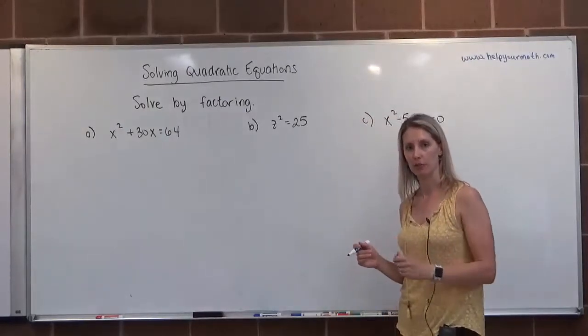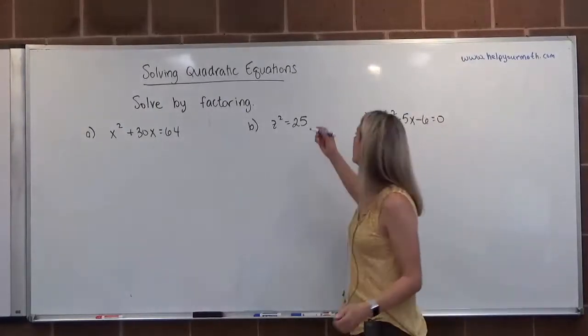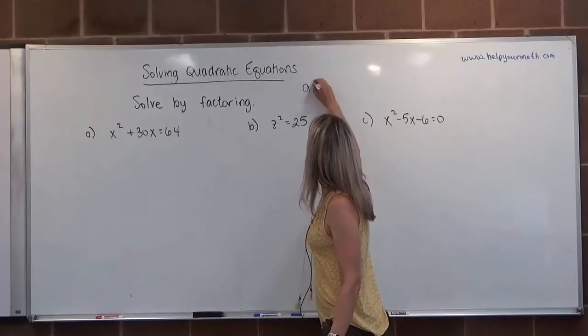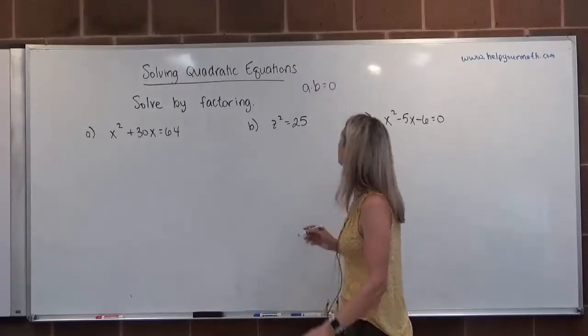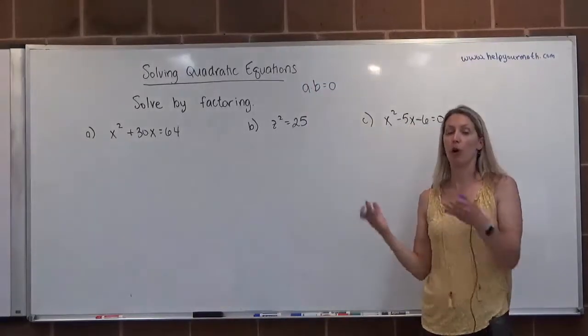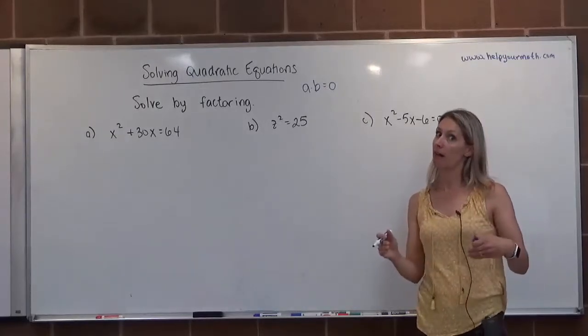Then once it equals zero, you factor the other side, usually the left-hand side, and you're left with a statement such as a times b equals zero. a and b are usually much more awkward than just a and b, it might be like x minus two and x plus five.